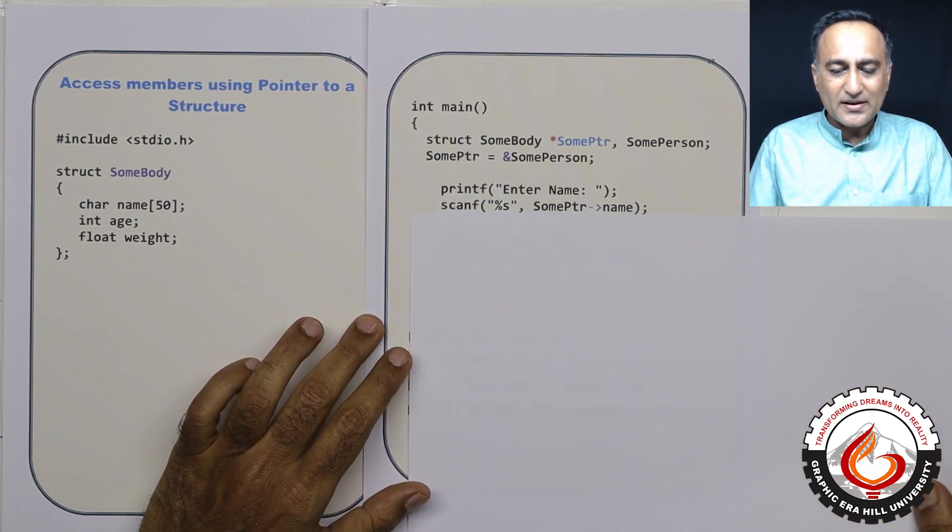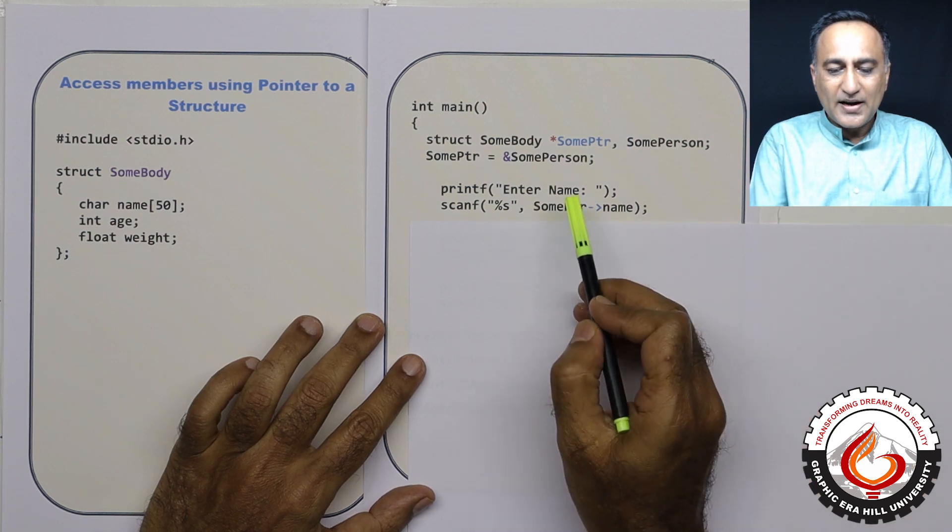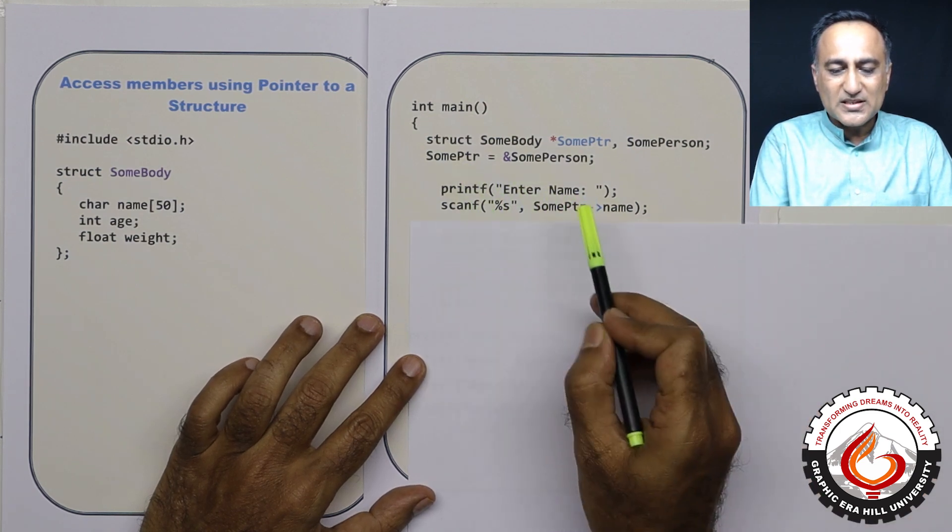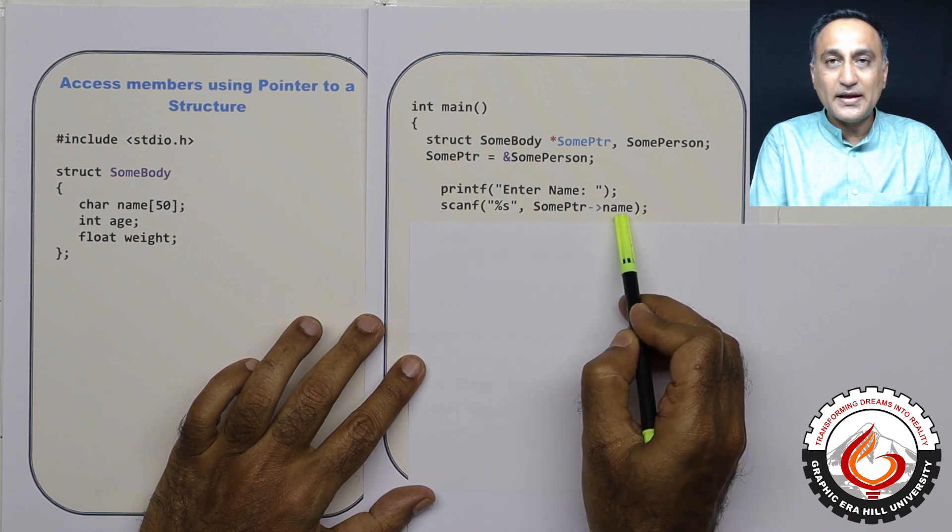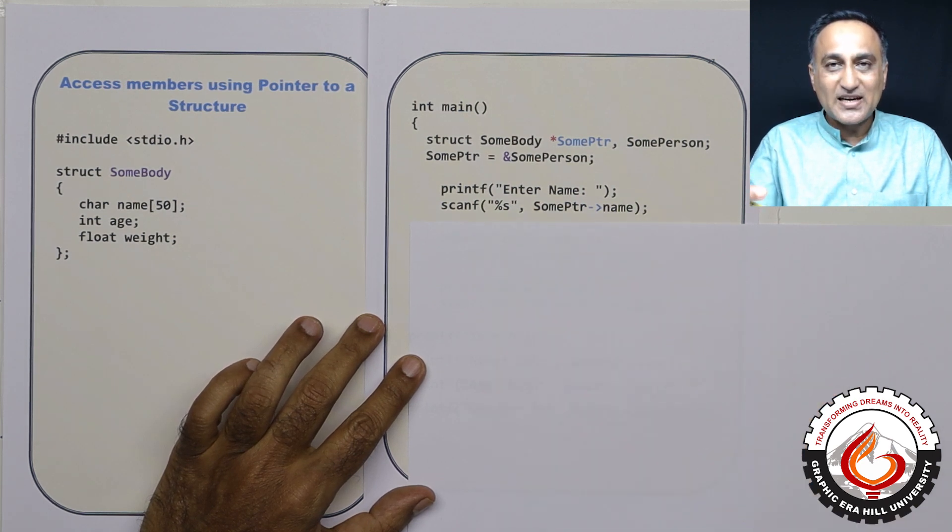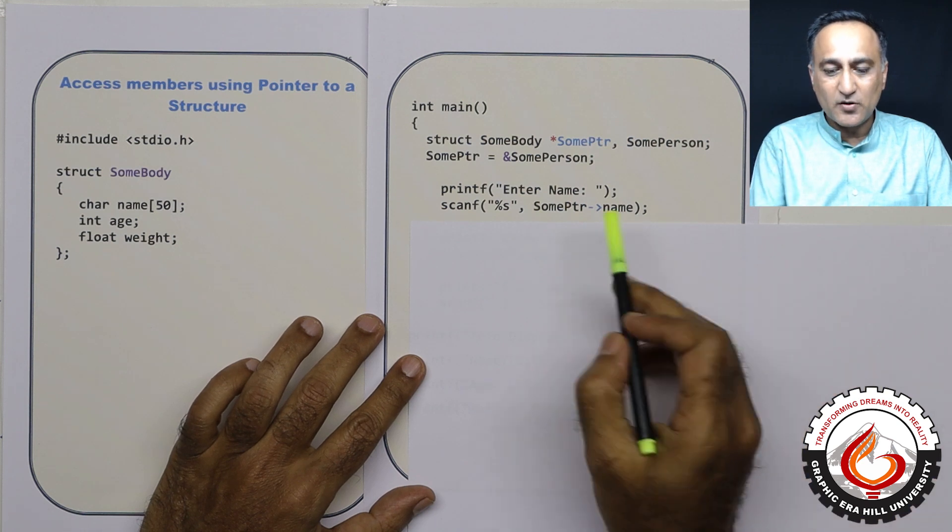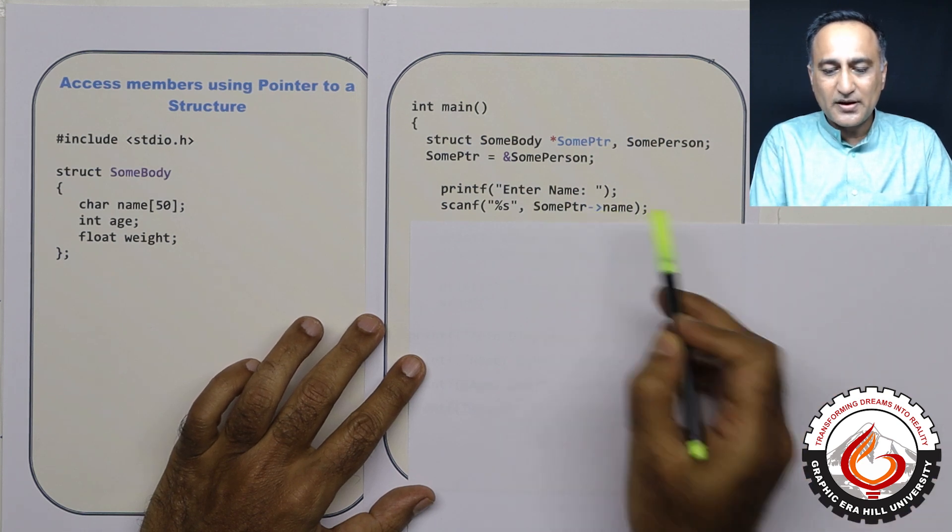Now let's say I want to enter the name. And if I have to read the name through this some pointer, I'm going to say %s some pointer arrow name, so that complicated star dot is all eliminated. Now I simply have to say some pointer arrow name.